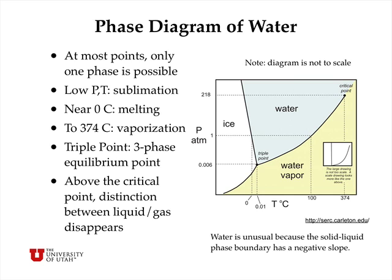Now let's take a look at the phase diagram of water. These diagrams are normally presented as PT, or pressure-temperature diagrams, and this one is definitely not to scale — it's exaggerated to make some points. At most points on this graph, only one phase is possible: in the white area it would be solid ice, in the blue area liquid water, and in the beige area gas phase water vapor. At low pressures and temperatures, we have a sublimation curve between the ice and the vapor.